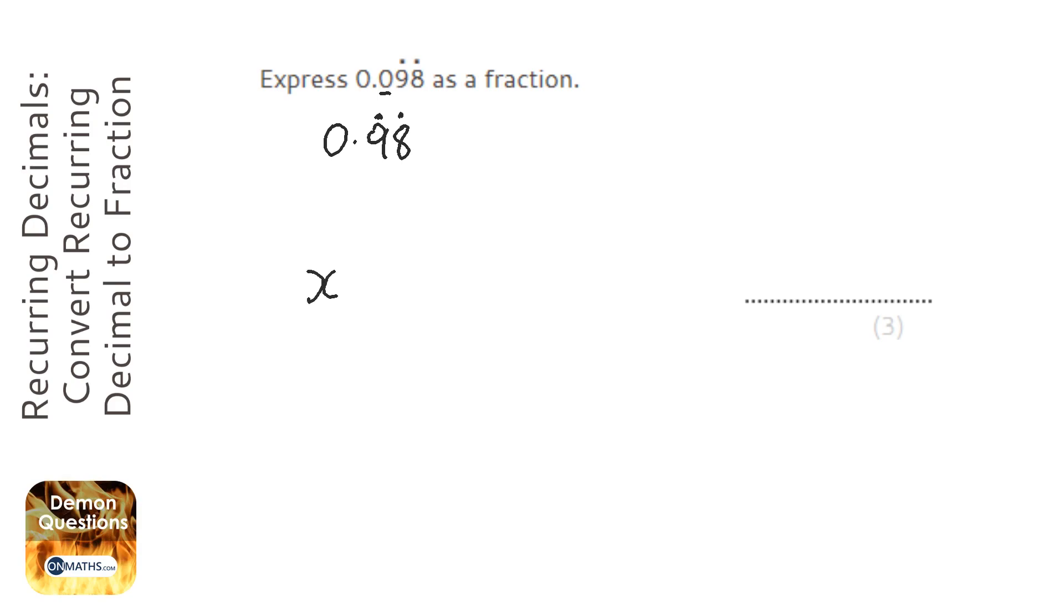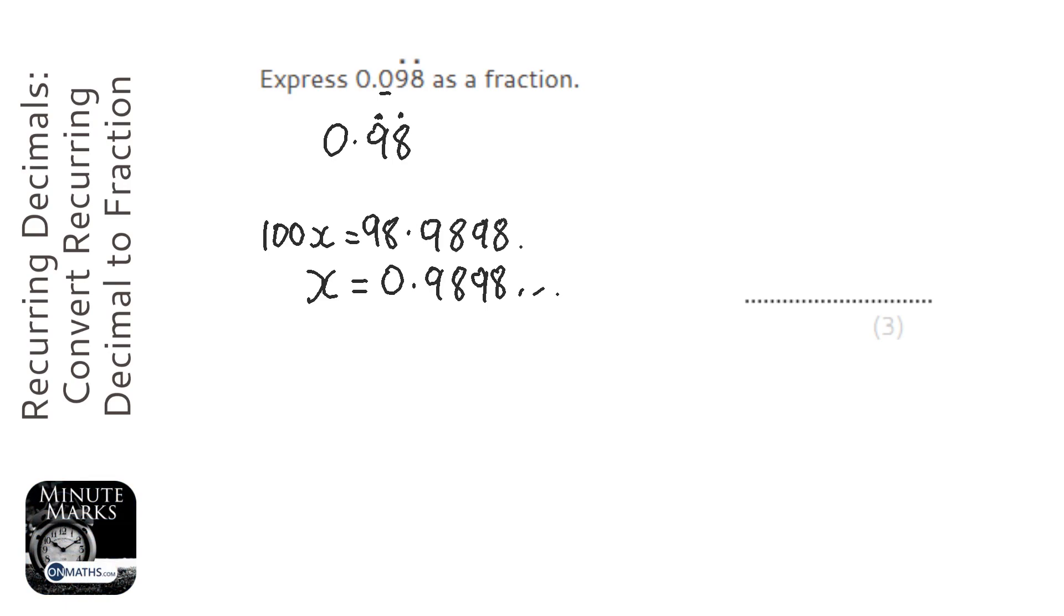So we're going to call x equals 0.9898 recurring, and so therefore 100x would be 98.9898 recurring.